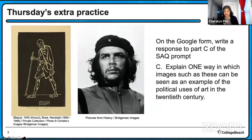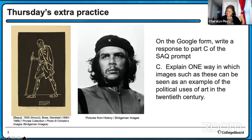Here's that prompt for those who weren't here or need a quick review. The prompt said: explain one way in which the images such as these can be seen as an example of political uses of art in the 20th century. If you weren't here last week, go ahead and take a quick moment to look at both images and think about ways that this could be used as an example of political uses of art in the 20th century.